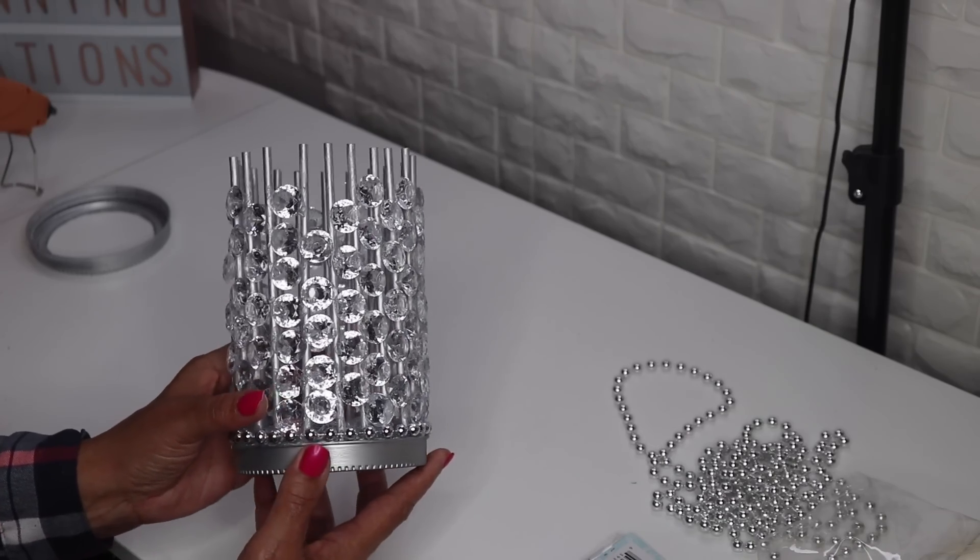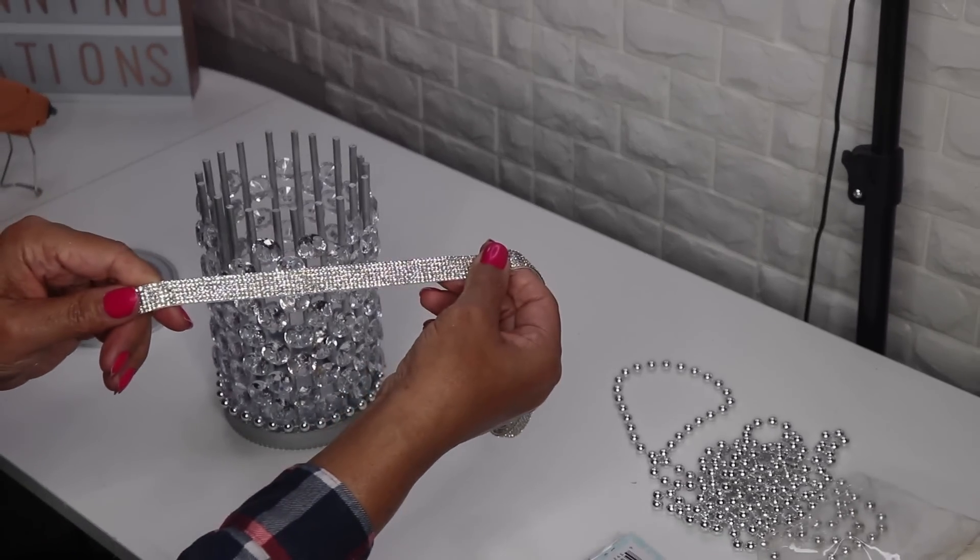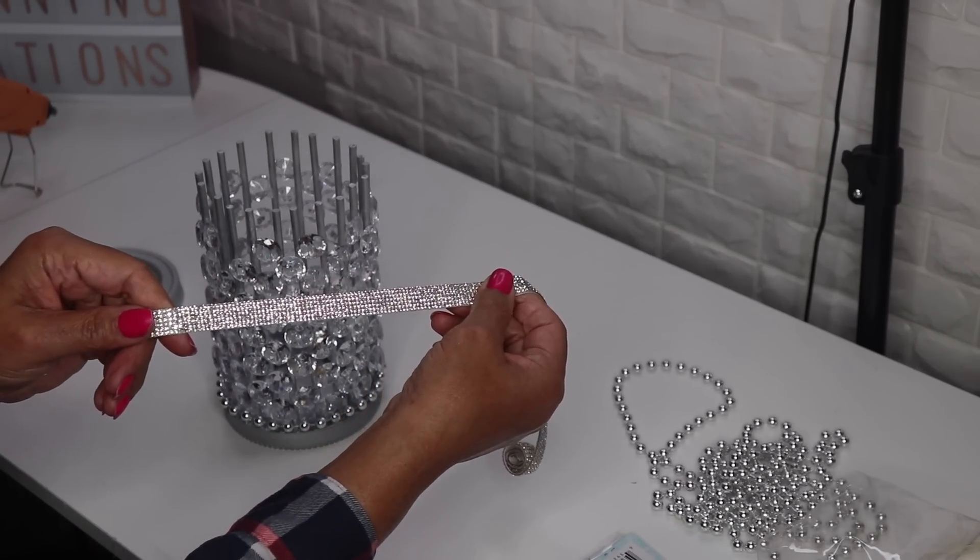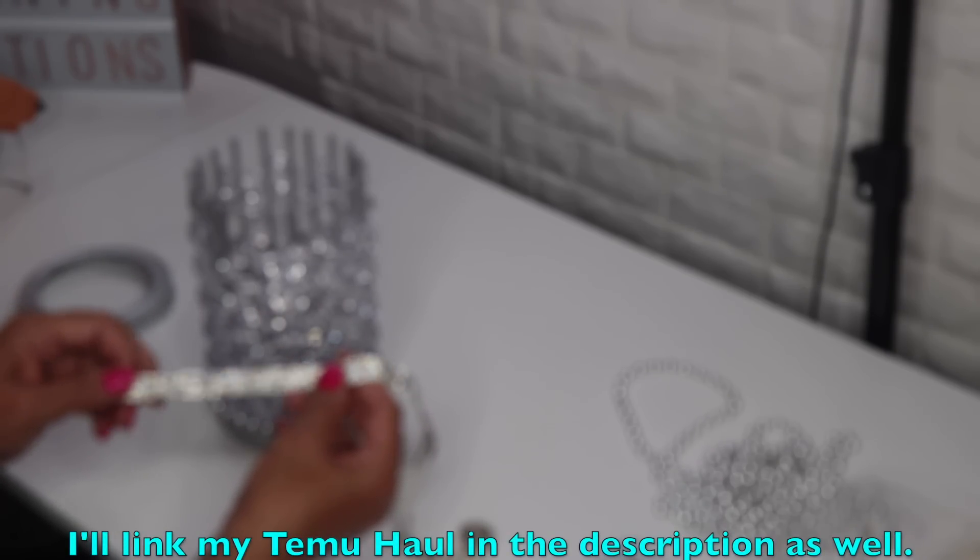This is where we are so far. Before I put the top on I want to use some of this diamond bling that I got from Teemu.com. If you saw my Teemu haul I mentioned I would be using this bling in a DIY or two. It was already cut and it makes it a whole lot easier. I'm going to put some on the base and use a little bit of glue to make sure it sticks indefinitely. I'm going to use some of my gorilla glue.